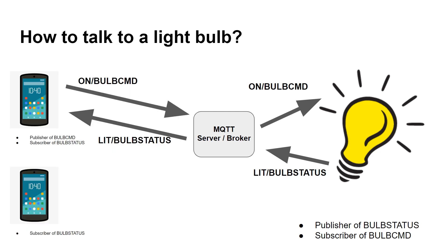Because this is a subscribe-publish model, you can actually have multiple devices subscribing or publishing. Here, our smartphone is — as before — a publisher of bulb command and a subscriber of bulb status, and the light bulb is the opposite. We've got another phone which is just a subscriber of bulb status. The same thing happens: you can send the on command, the on command goes to the light bulb.